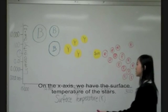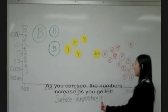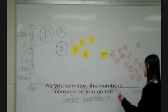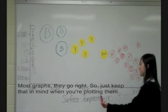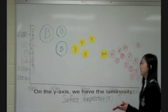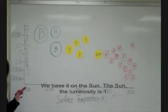On the x-axis we have the surface temperature of the stars and as you can see the numbers increase as you go left. Most graphs you see they go right, so just keep that in mind when you're plotting them.